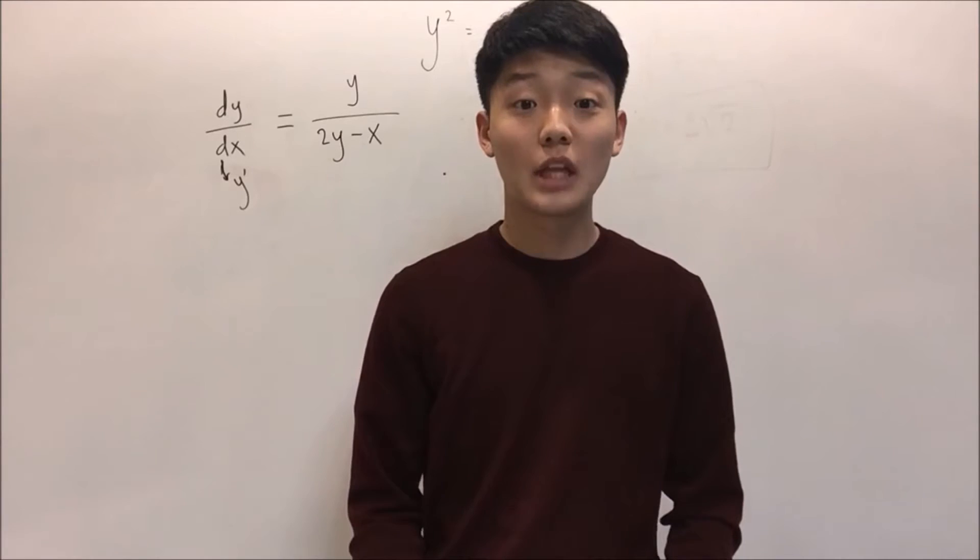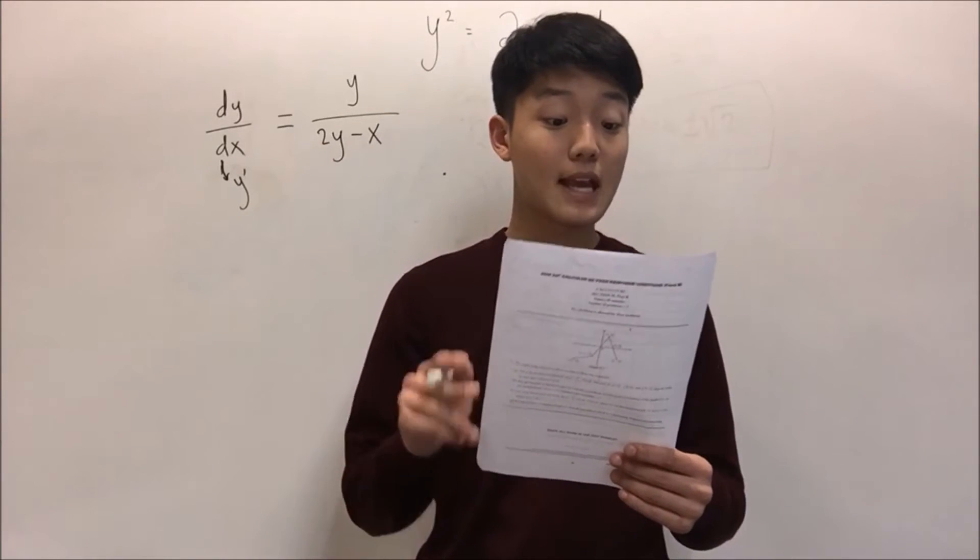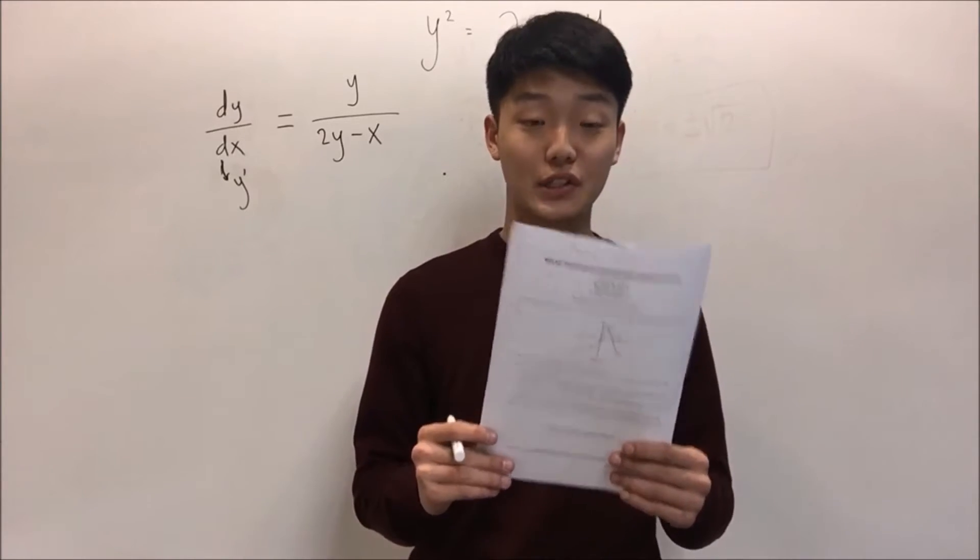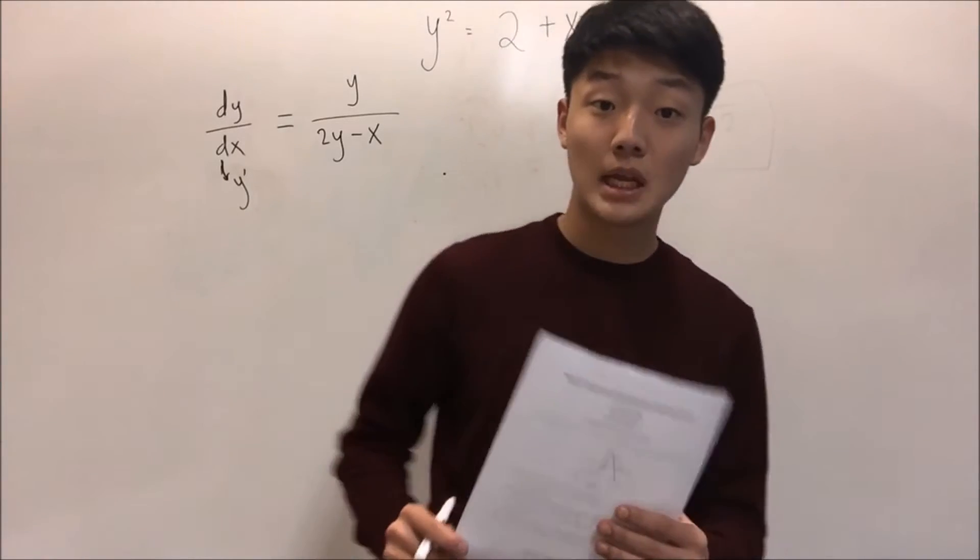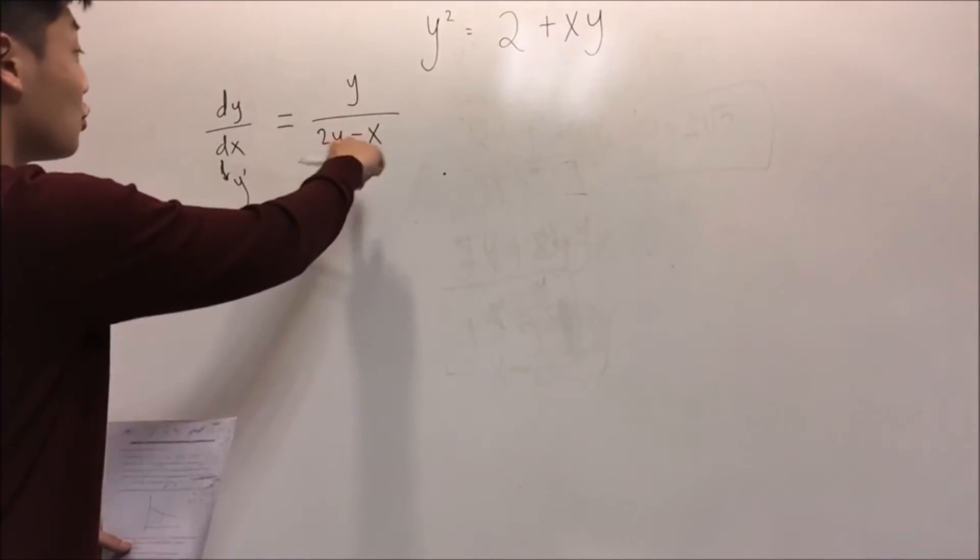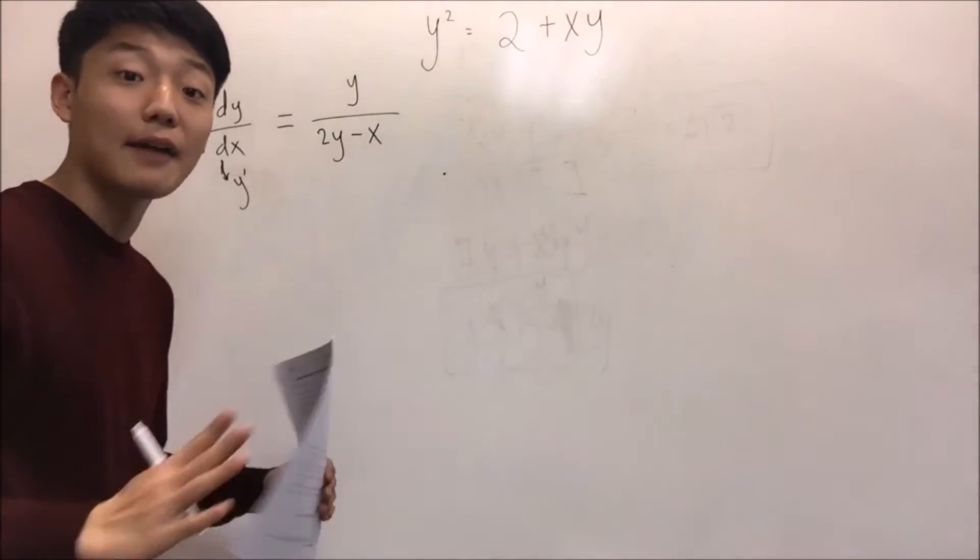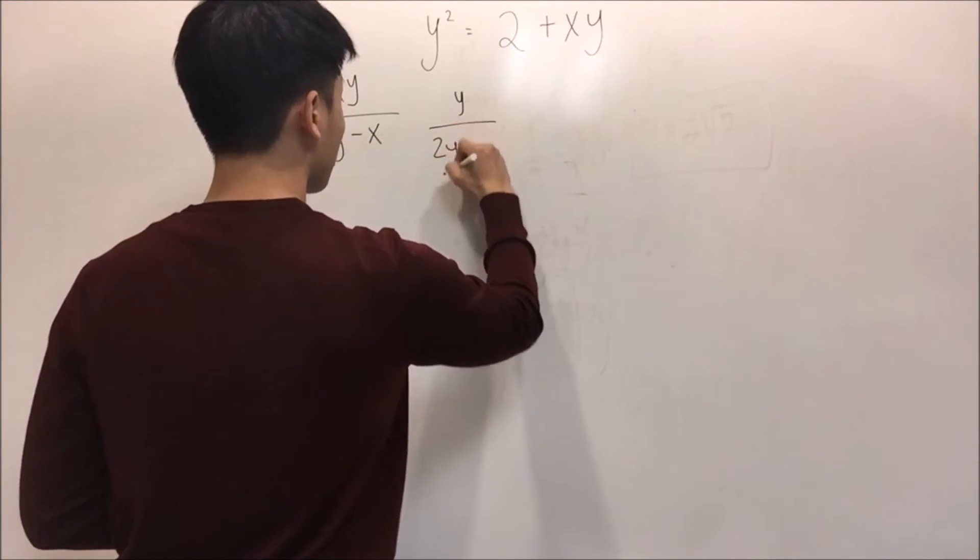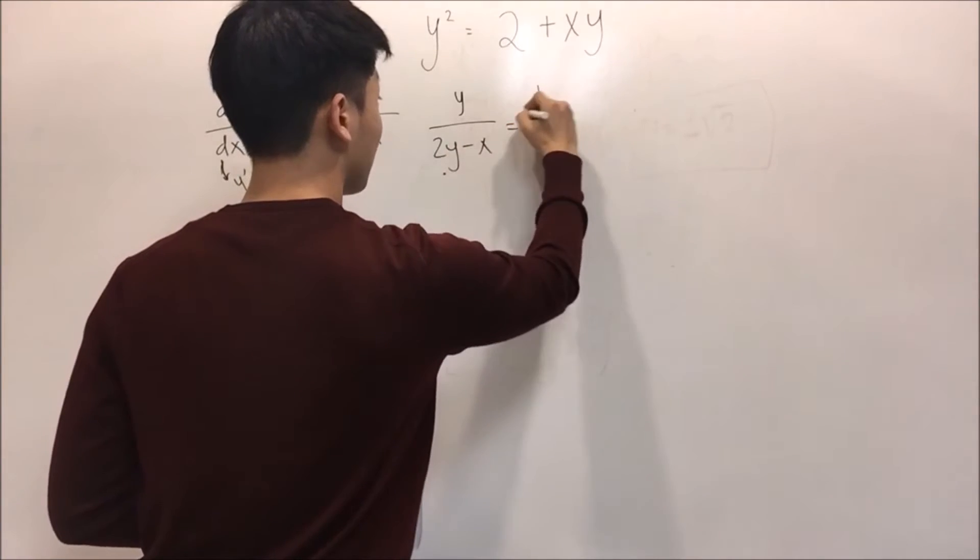Part B says: find all points (x, y) on the curve where the line tangent to the curve has slope of one-half. That means this dy/dx, y over 2y minus x, has to equal one-half. So let's write it down. y over 2y minus x equals one-half.